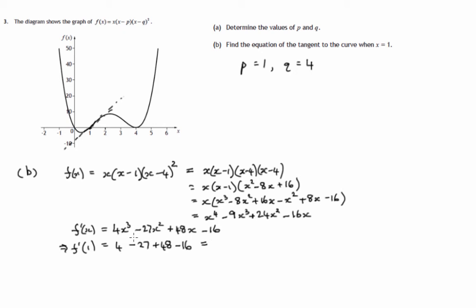So let's take the positive terms: 48 plus 4 is 52. And the negative terms are negative 27, another negative 16, that'll be 43. And 43 from 52 is 9.